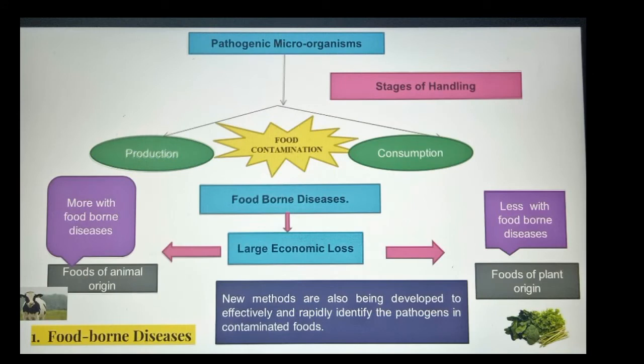When we talk about foodborne disease, many pathogenic microorganisms can contaminate food during various stages of handling between production and consumption. Consumption of these foods can cause foodborne disease and large economic loss. Foods of animal origin are associated more with foodborne disease than foods of plant origin. New methods are also being developed to effectively and rapidly identify pathogens in contaminated food.